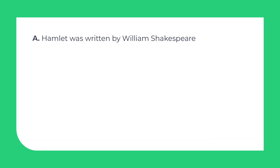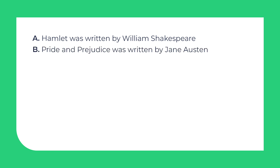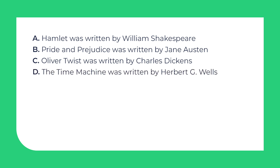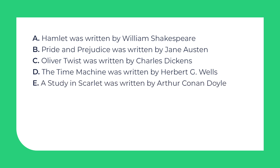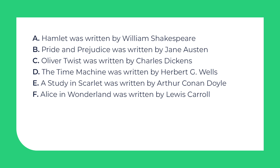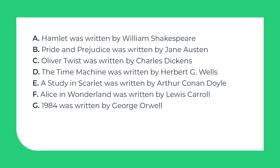Let's check your answers now! Hamlet was written by William Shakespeare, Pride and Prejudice was written by Jane Austen, Oliver Twist was written by Charles Dickens, The Time Machine was written by Herbert G. Wells, A Study in Scarlet was written by Arthur Conan Doyle, Alice in Wonderland was written by Lewis Carroll, 1984 was written by George Orwell. And finally, Jane Eyre was written by Charlotte Bronte.